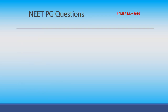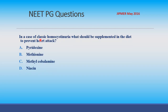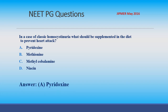PG question (JIPMER May 2016): In a case of classic homocystinuria, what should be supplemented in the diet to prevent heart attacks? Options: pyridoxine, methionine, methylcobalamin, and niacin. The answer is pyridoxine.